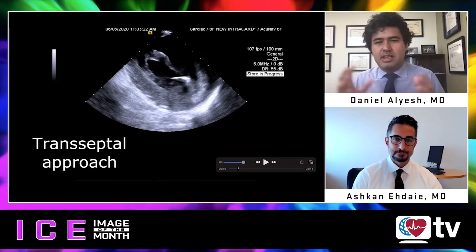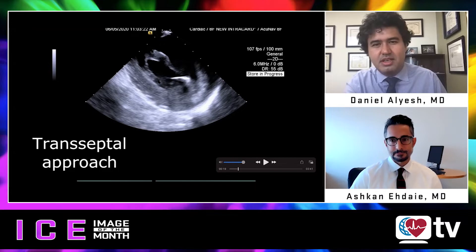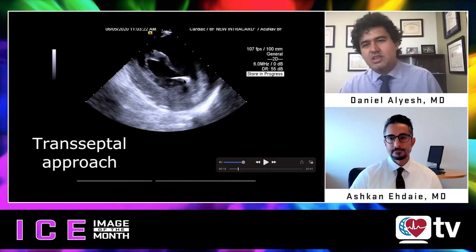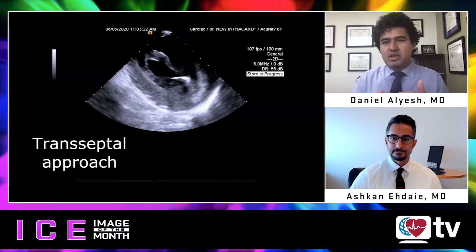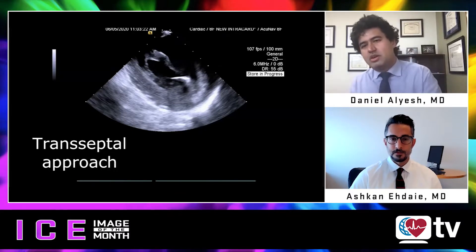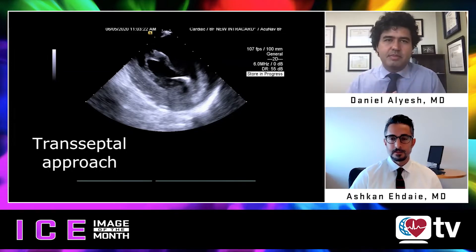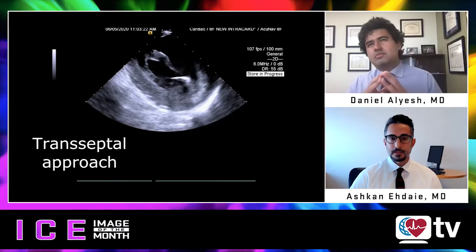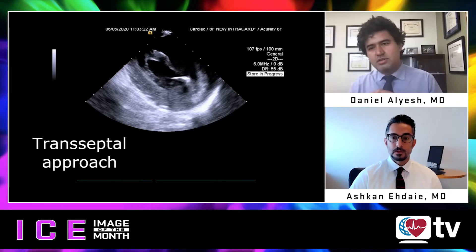Looking at this ICE image, it shows the transeptal approach with the catheter coming through the mitral valve toward the anterolateral papillary muscle. The transeptal approach gives you good reach laterally and a lower approach to the anterolateral papillary muscle. Do you find it works as well for a PVC originating from the superior aspect? Yes, absolutely.